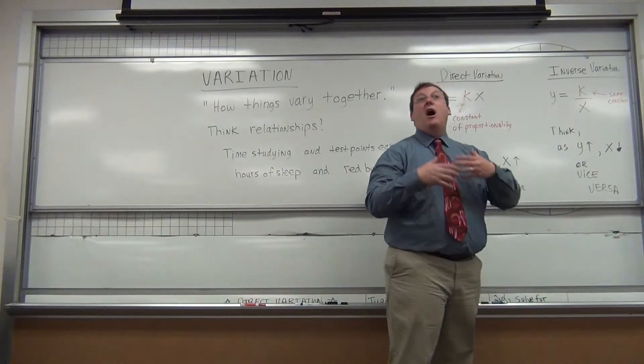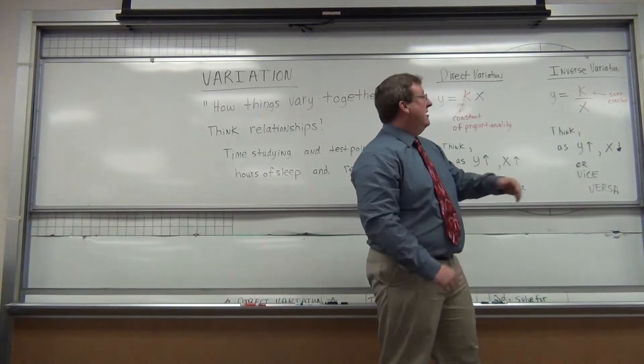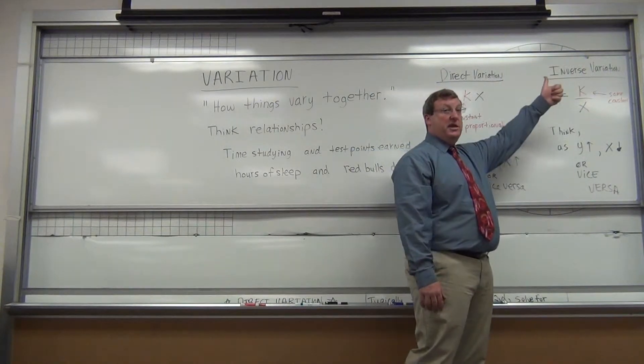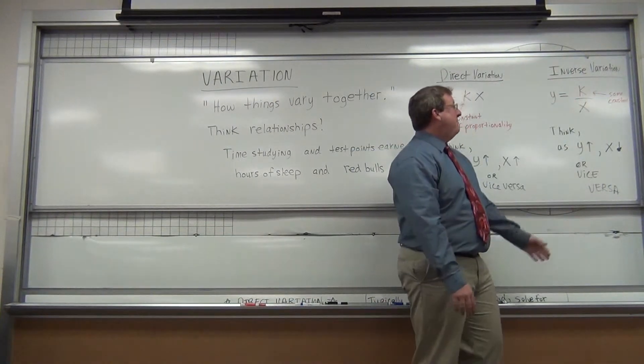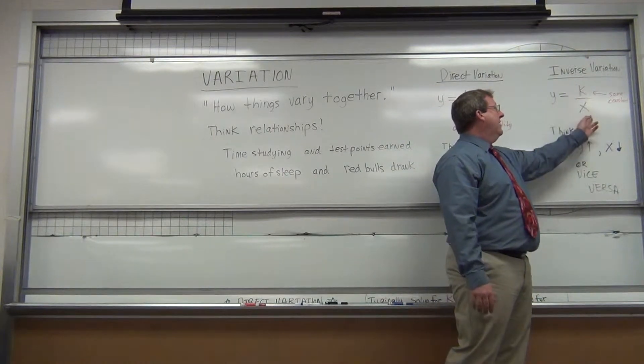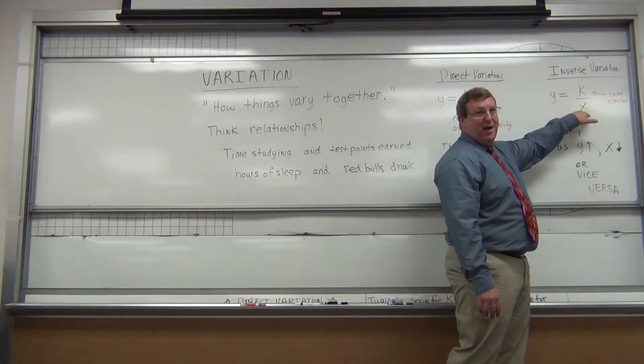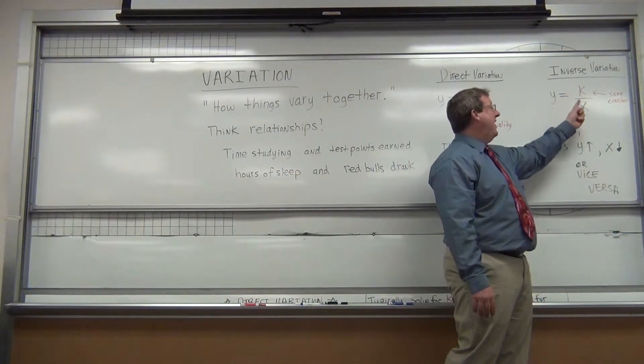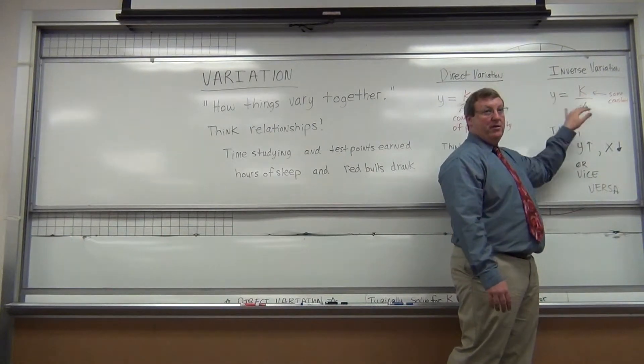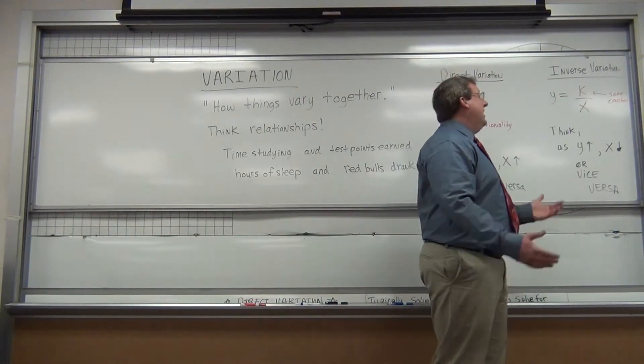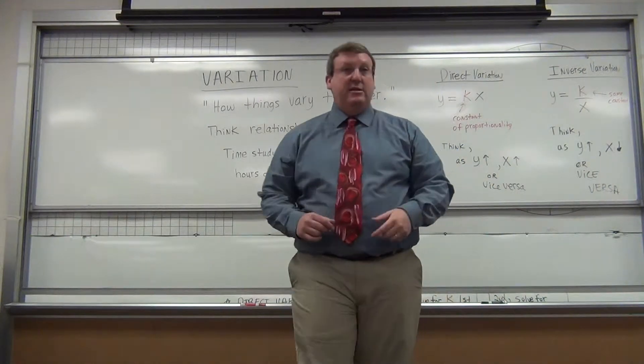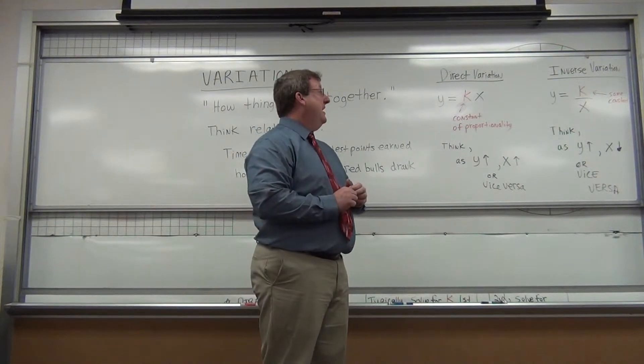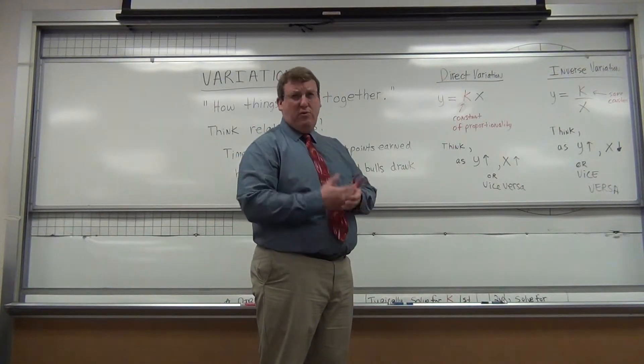The other concept, the opposite of direct variation, is inverse variation. Inverse means as one goes up, the other one goes down. Mathematically speaking, if you have a big number on the bottom of a fraction, you're dividing by a big number, so your output will be smaller. If you're dividing by a smaller number, your output will be bigger. So inverse variation, you hear the words inversely related or inversely proportional. Two types of relationship, but the key word is variation or proportional or relationship.